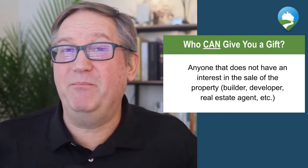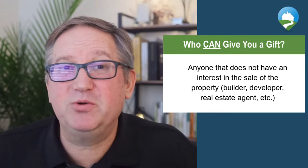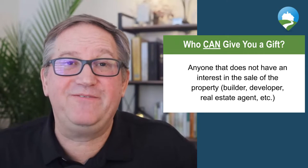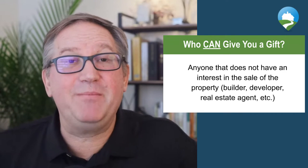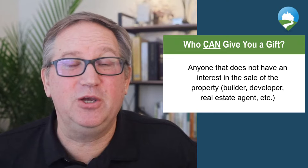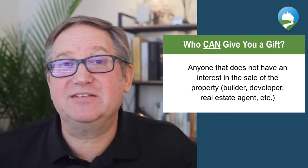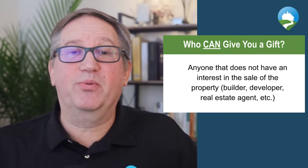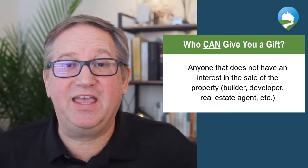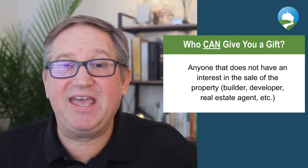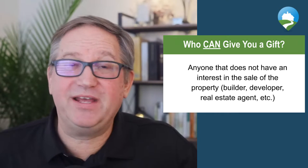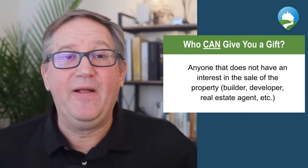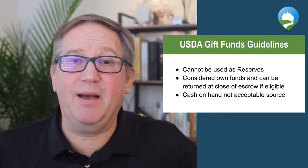This is much different from most other loan programs. Fannie Mae is the most strict — only family members can give you a gift. Freddie Mac is a little more loose. FHA has a much broader definition of who can give you gift funds, same with VA and USDA. With USDA, they don't necessarily have to be a family member, but they just cannot benefit from the sale of the property.